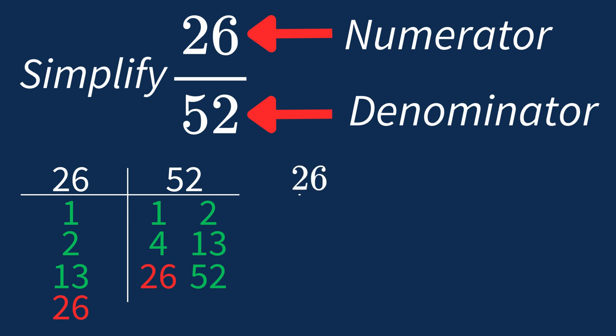Dividing the numerator, 26 by 26, gives us 1. Dividing the denominator, 52 by 26, gives us 2.